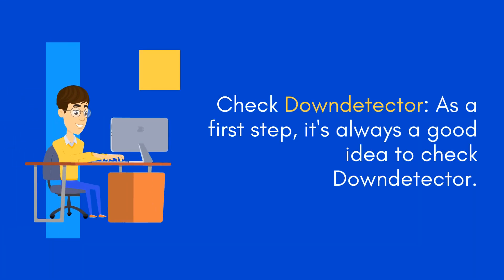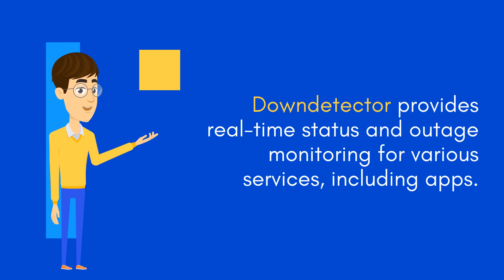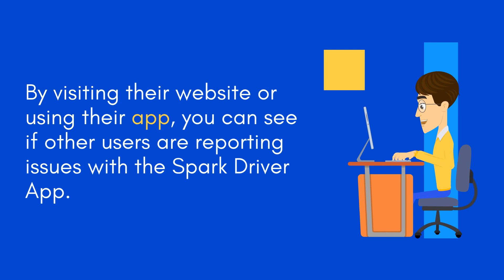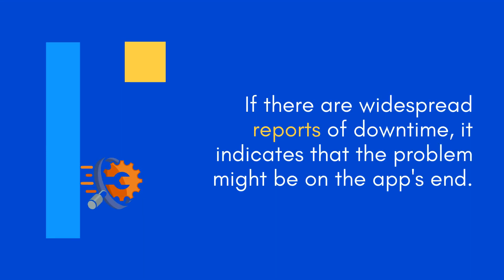Check Down Detector. As a first step, it's always a good idea to check Down Detector. Down Detector provides real-time status and outage monitoring for various services, including apps. By visiting their website or using their app, you can see if other users are reporting issues with the Spark Driver app. If there are widespread reports of downtime, it indicates that the problem might be on the app's end.